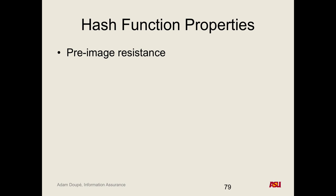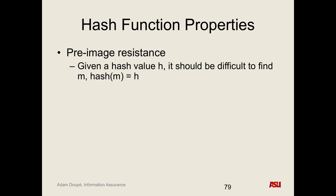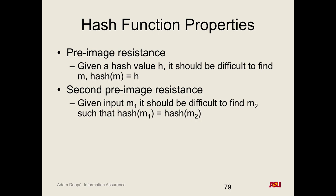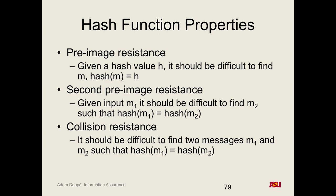The formal properties of cryptographic hash functions: pre-image resistance means given a hash value, it should be difficult to find any message that hashes to it — requiring roughly 2^128 tries. Second pre-image resistance means given a specific message M1, it should be difficult to find another message M2 such that their hashes collide. Collision resistance generalizes this: it should be difficult to find any two messages M1 and M2 with the same hash.